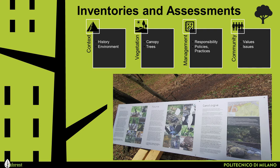The four sections cover: vegetation — including canopy cover assessment and tree inventory; management — including responsibilities, plans, policies, regulation, and management practices; and community. Context addresses history, land use changes, and environmental assessment.